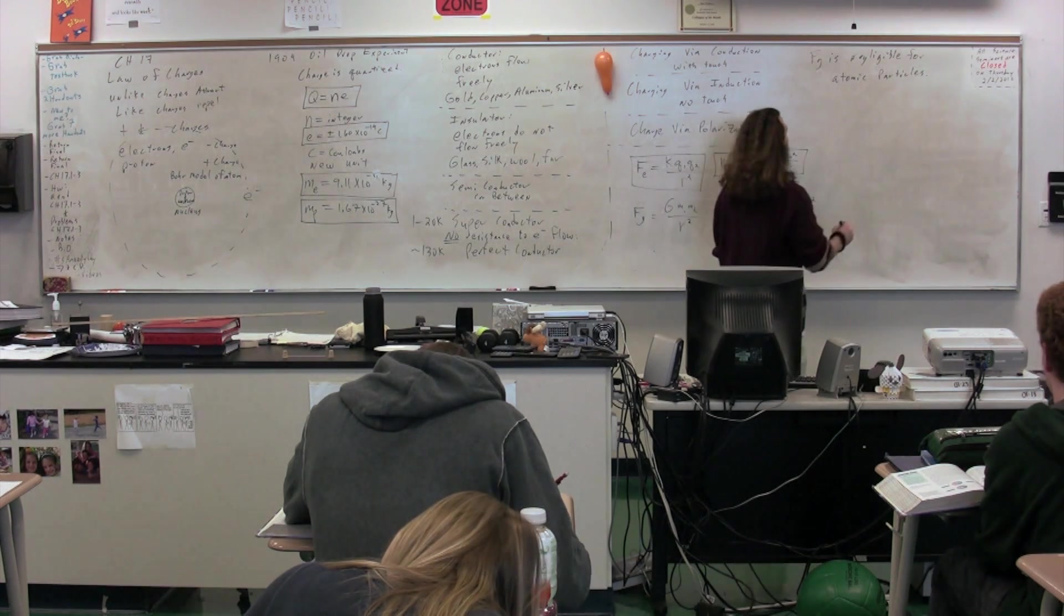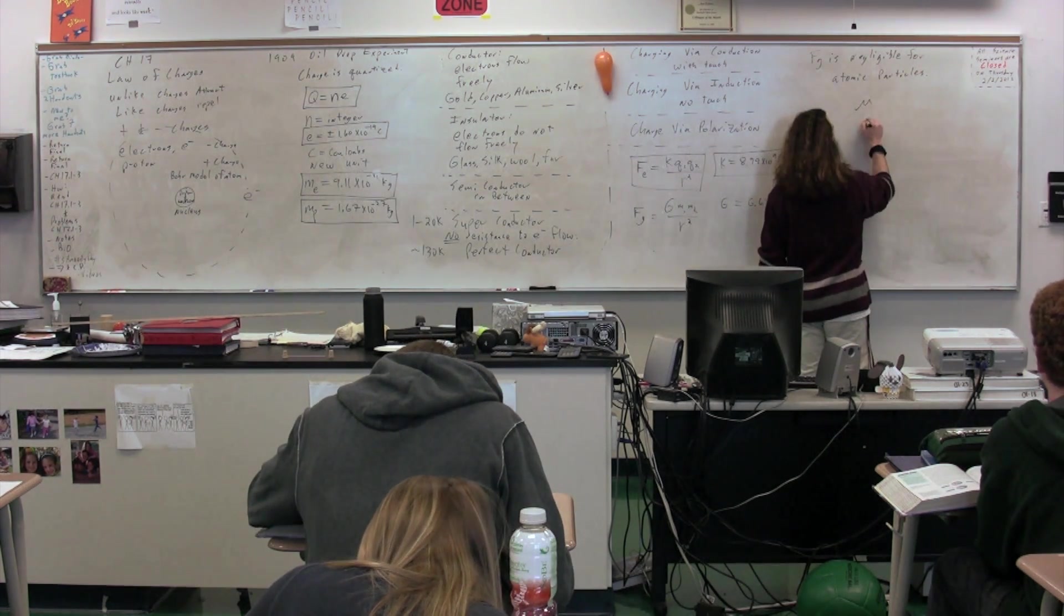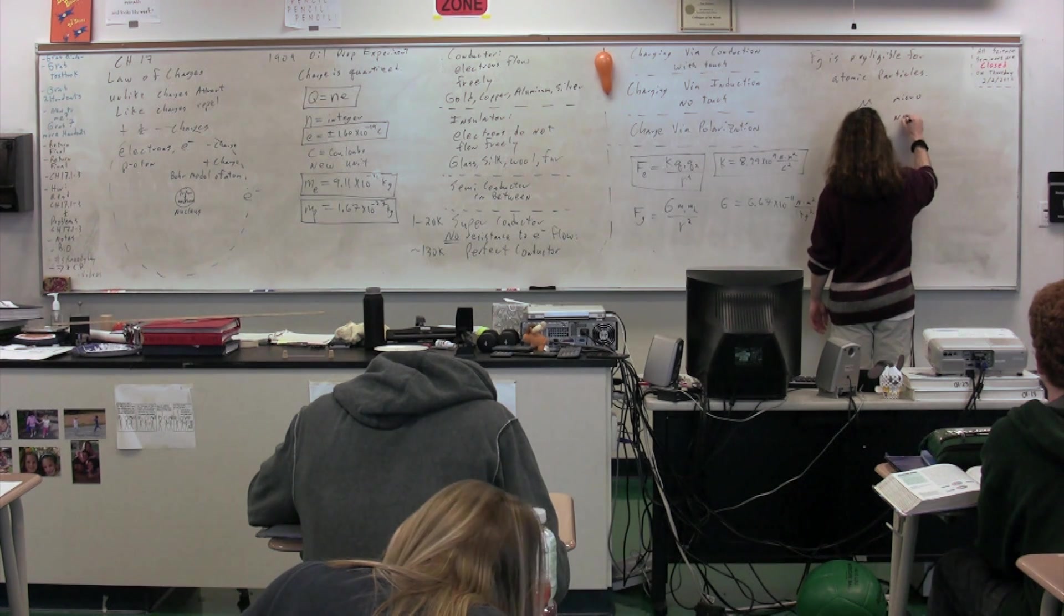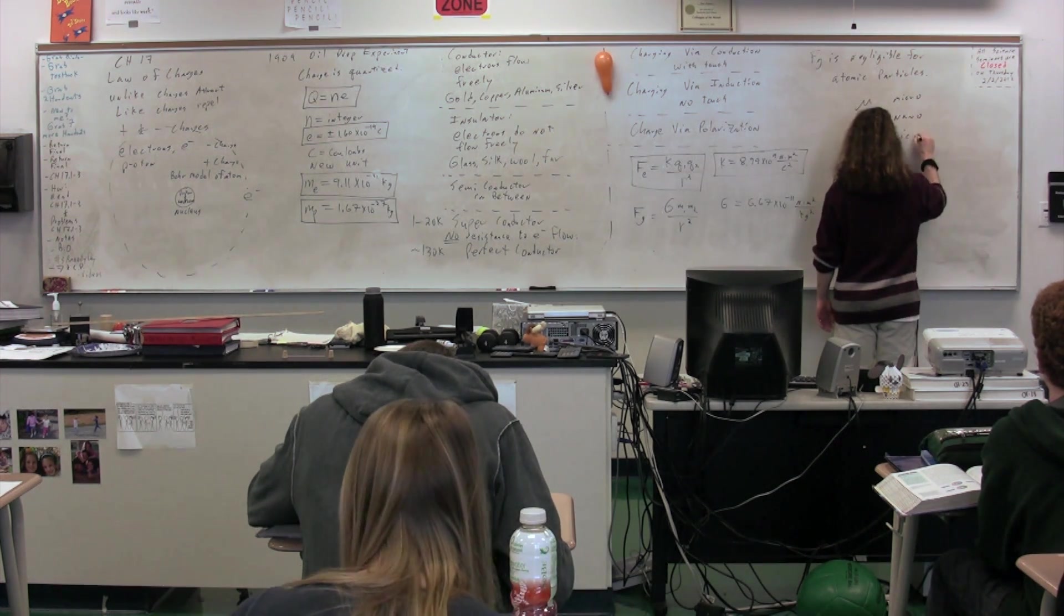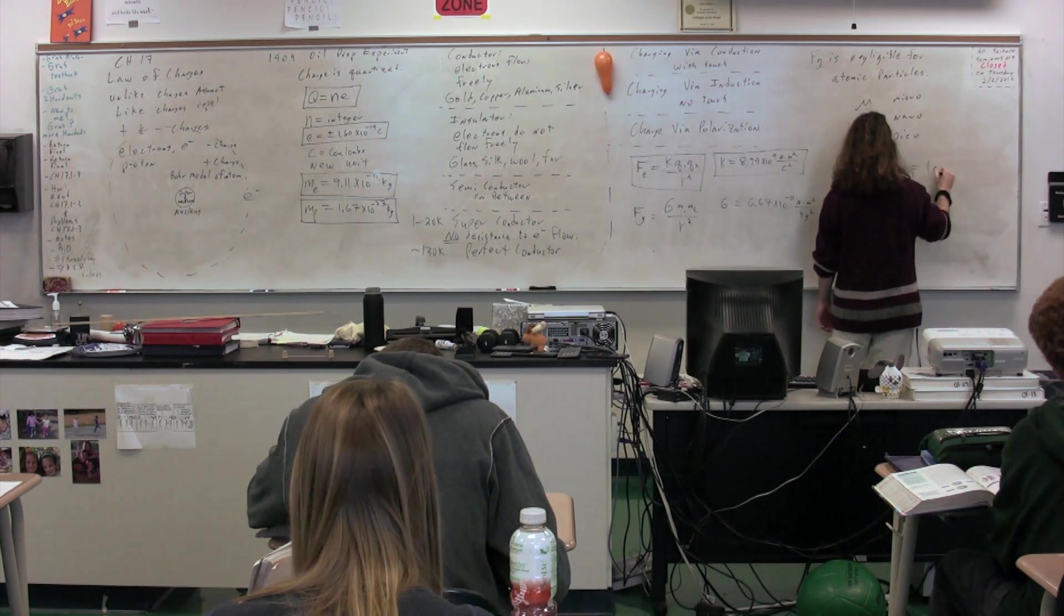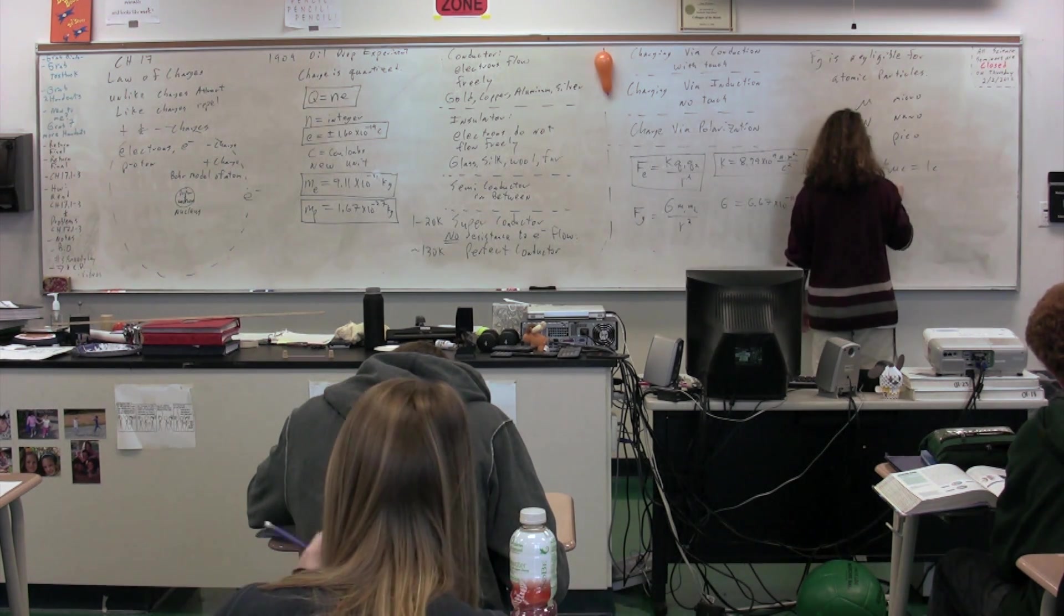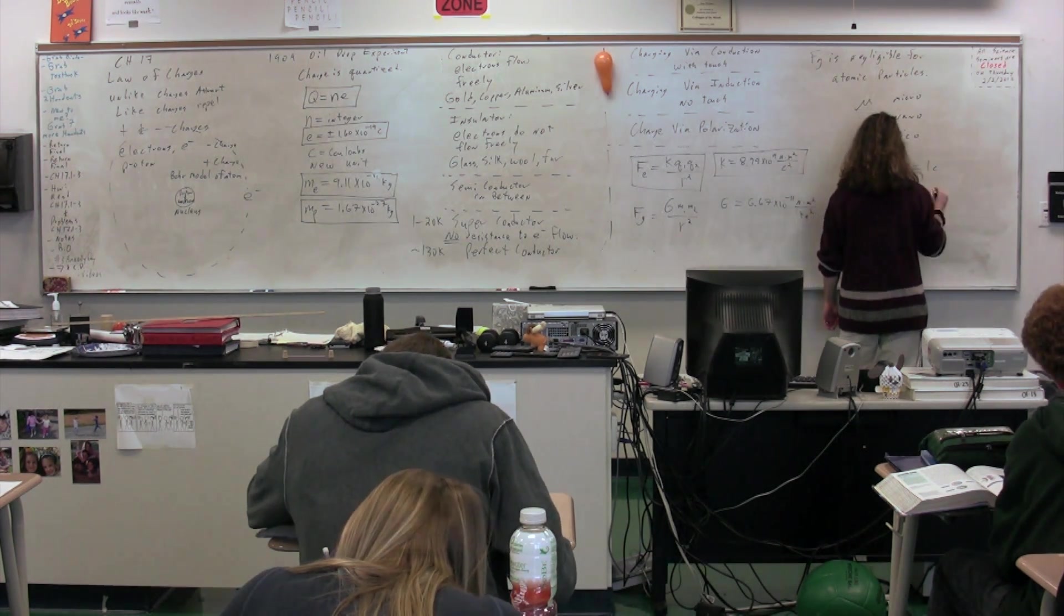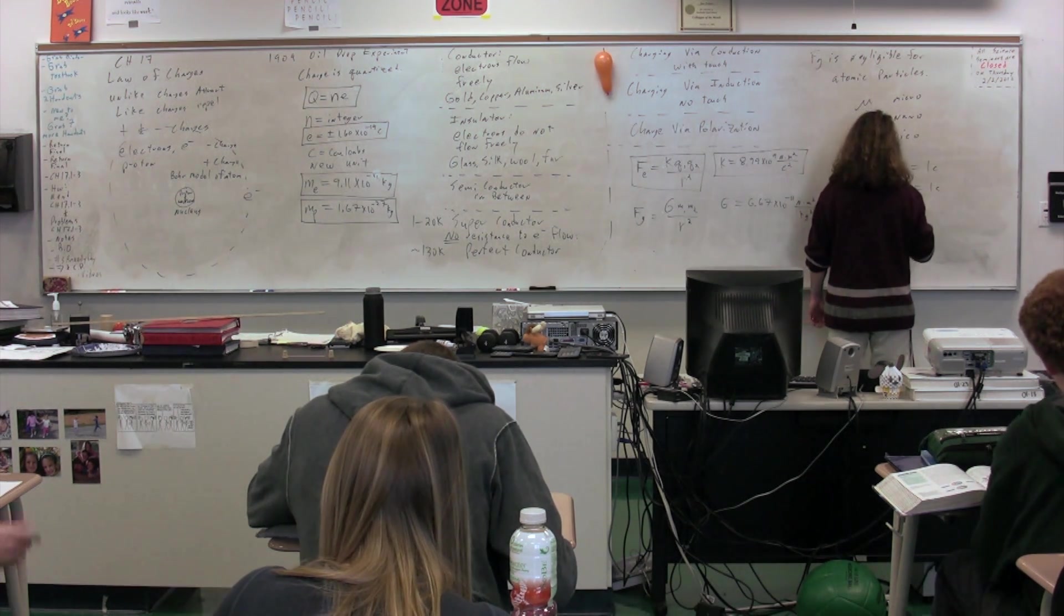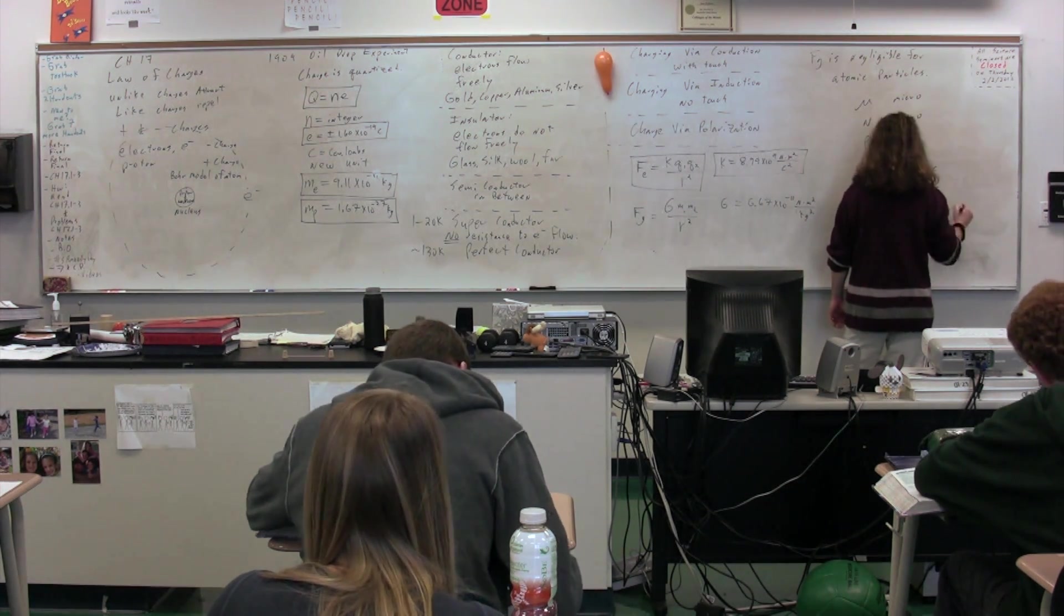We also need to know these. Micro, nano, and pico. 1 times 10 to the 6th microcoulombs equals 1 coulomb. 1 times 10 to the 9th nanocoulombs equals 1 coulomb. And 1 times 10 to the 12th picocoulombs equals 1 coulomb.